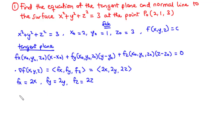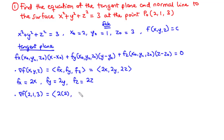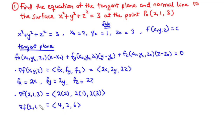Next, we find the gradient of the function at the point x0, y0, z0, which corresponds to (2, 1, 3). So the gradient at the point (2, 1, 3) equals: 2 times 2, 2 times 1, and 2 times 3. That gives us the vector (4, 2, 6). This is the gradient of the function at the point (2, 1, 3).